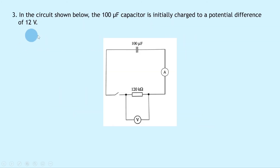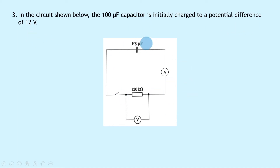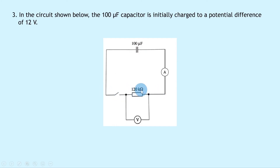Question 3 says that in the circuit shown, the 100 microfarad capacitor is initially charged to a potential difference of 12 volts. There's no battery, but we've got a 100 microfarad capacitor in series with an ammeter, a switch, and a 120 kilohm resistor, with a voltmeter in parallel with the resistor.